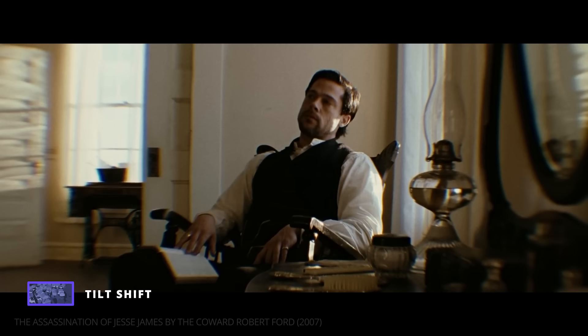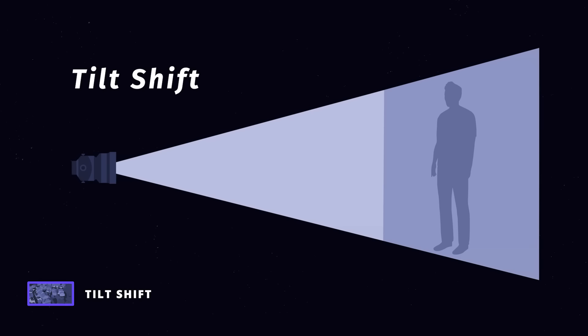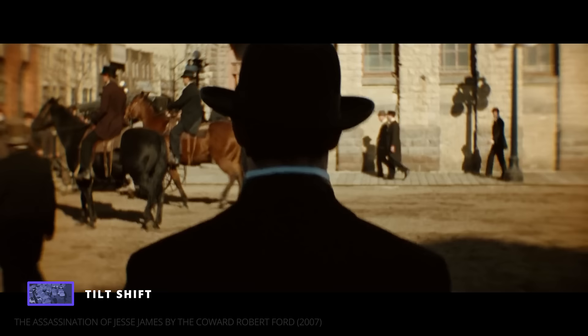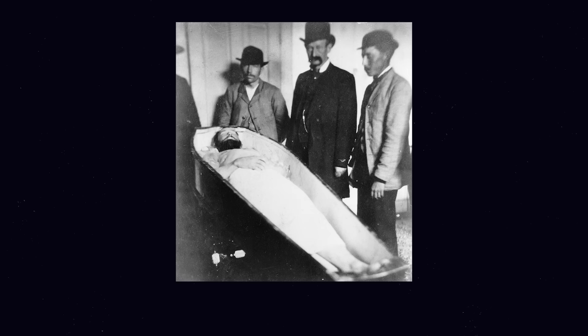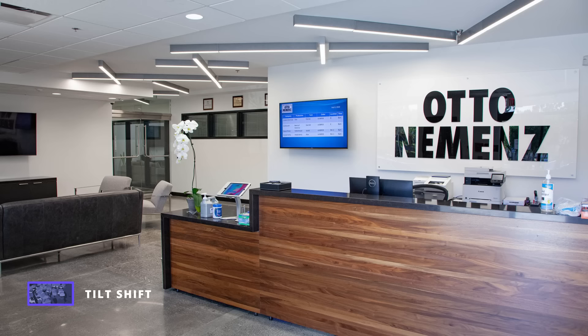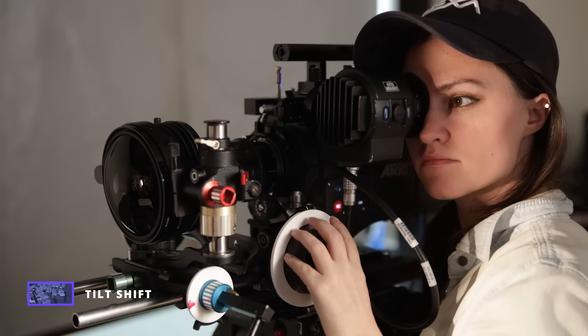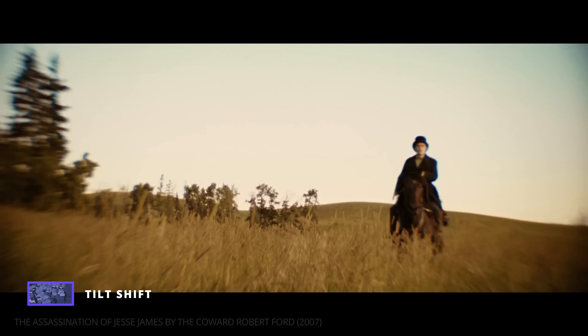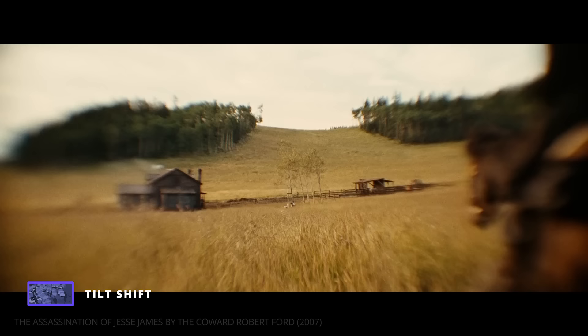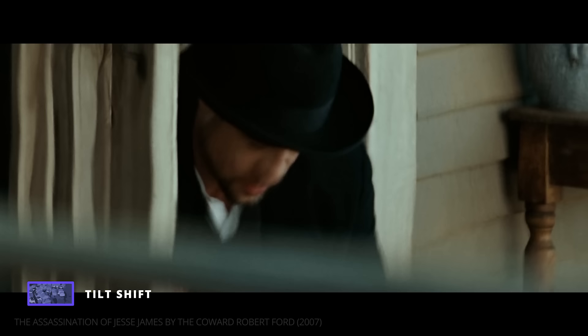In The Assassination of Jesse James by the Coward Robert Ford, cinematographer Roger Deakins wanted to use the blurring effects of a tilt-shift lens, modified to create a more dreamy, vintage, and stylized look that matches photographs from that time period. He teamed up with Otto Nemmens International to create the Deaconizer lens — a riff on the tilt-shift lens that also diffracts colors and vignettes the image, resulting in a completely unique visual style.